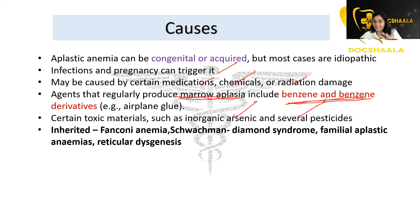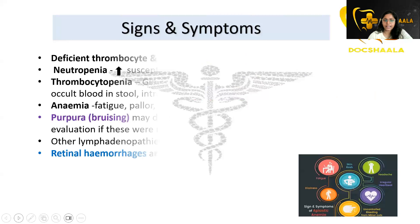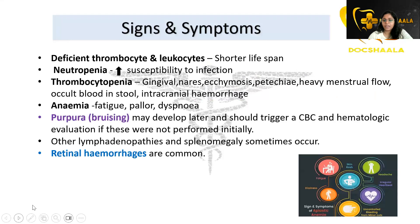Aplastic anemia can be congenital or acquired. The congenital, inherited causes include Fanconi anemia, Schwachman-Diamond syndrome, familial aplastic anemias, and reticular dysgenesis.